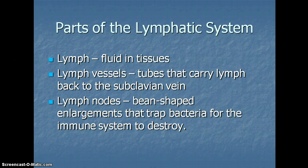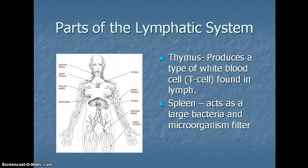The parts of the lymphatic system you'll be required to know are: lymph, which is any fluid in tissues; lymph vessels, which are tubes that carry that fluid back to the subclavian vein; lymph nodes, which are bean-shaped enlargements that trap bacteria for the immune system to destroy; your thymus, which produces a type of white blood cell called the T-cell, which is found in lymph; and your spleen. Your spleen is essentially a very large lymph node that acts as a large bacteria and microorganism filter. It also helps get rid of old red blood cells.